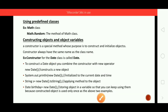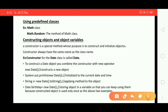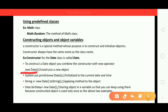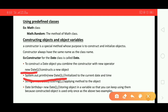To construct a date object you combine the constructor with the new operator. The new operator combined with the constructor constructs a new Date object. Once you construct it, you can initialize it — here we are initializing to the current date and time and passing the object to a method, which prints the current date and time of your system.